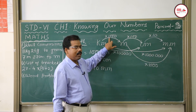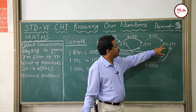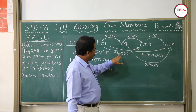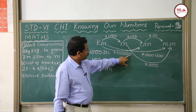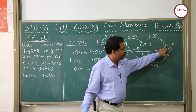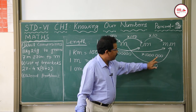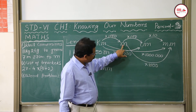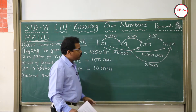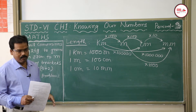Summary of bigger to smaller unit conversions: kilometer to meter multiply by 1000; meter to centimeter multiply by 100; centimeter to millimeter multiply by 10; kilometer to centimeter multiply by 1 lakh; kilometer to millimeter multiply by 10 lakh; meter to millimeter multiply by 1000. These are all conversions of bigger units to smaller units.